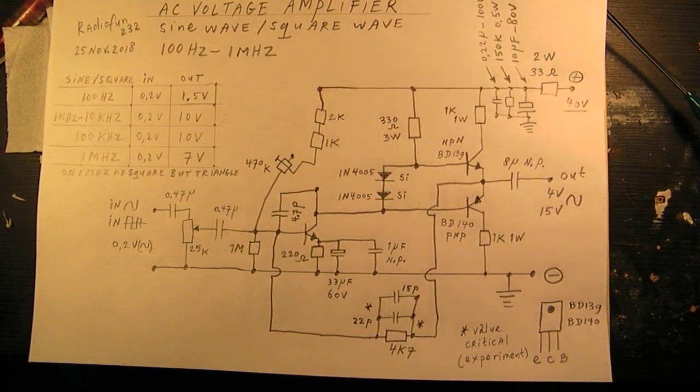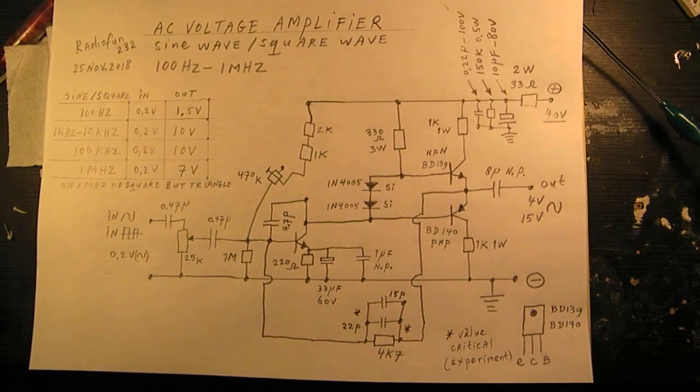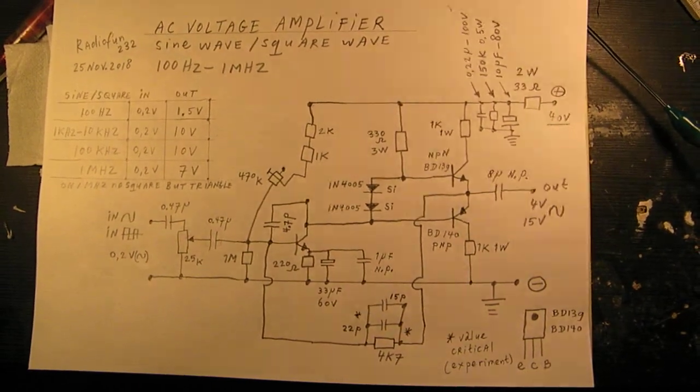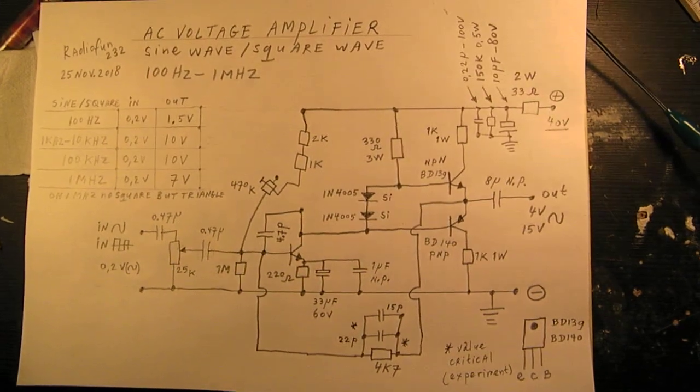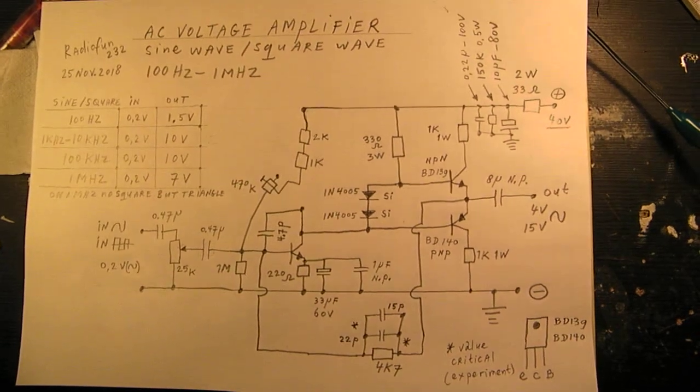Sometimes it can be handy to have an amplifier that amplifies a sine wave or a square wave to a more or less substantial level. And then I mean 7 volts or 10 volts AC output.